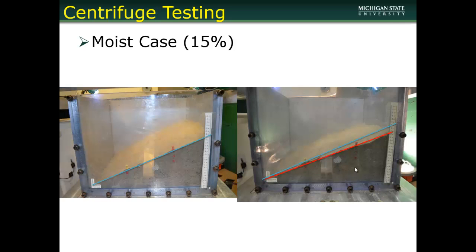For the second case, we see before testing on the left-hand side and after testing on the right-hand side. Again, we see no slope failure — the push pins are still in the same place — but we do see some settlement. As we increased the stress in the moist case, we saw about a half an inch of settlement on the slope.